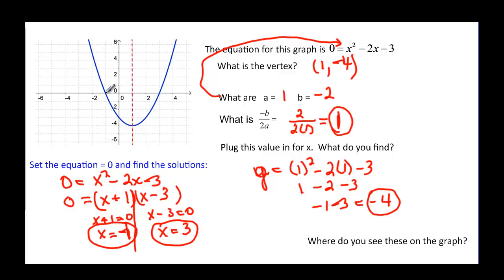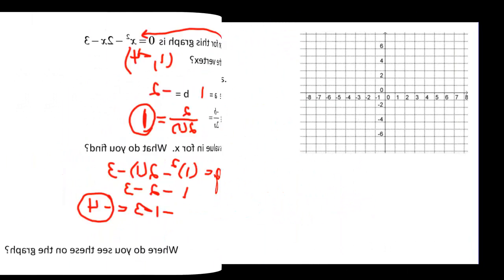And if you look on your graph, here's your negative 1, and here's your x equal 3. So x-intercepts are solutions to the quadratic. Nice little factor, remember. If you're looking at a graph and you want to know what the solutions to the quadratic is, just find the x-intercepts.